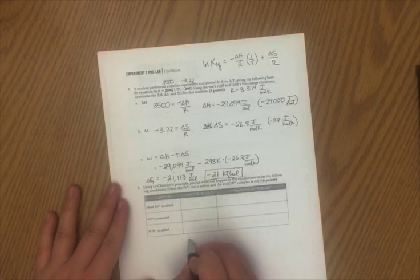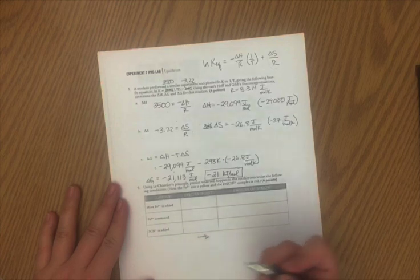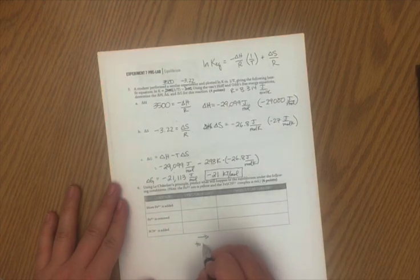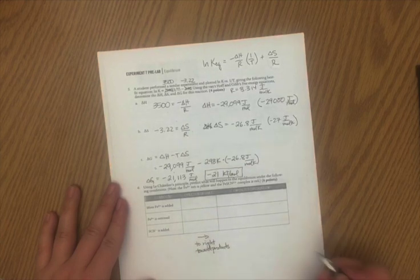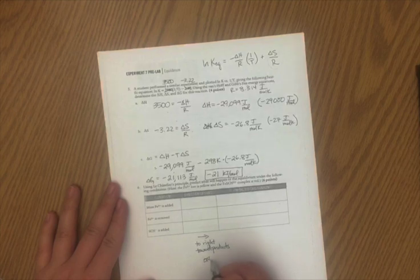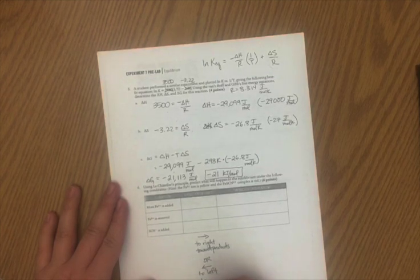When it asks for the direction of the shift, there's sort of three ways that you can do it. You could draw a right arrow if it was going to the right. You could say to the right or you could say towards the products. Those are all equivalent things. You could also say it's going to the left or toward the reactants.